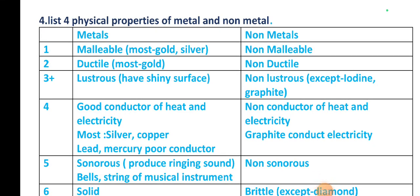Metals are malleable, non-metals are non-malleable. Metals are ductile, non-metals are non-ductile. Metals are lustrous and have a shiny surface. Non-metals are non-lustrous, except iodine and graphite, which are lustrous.